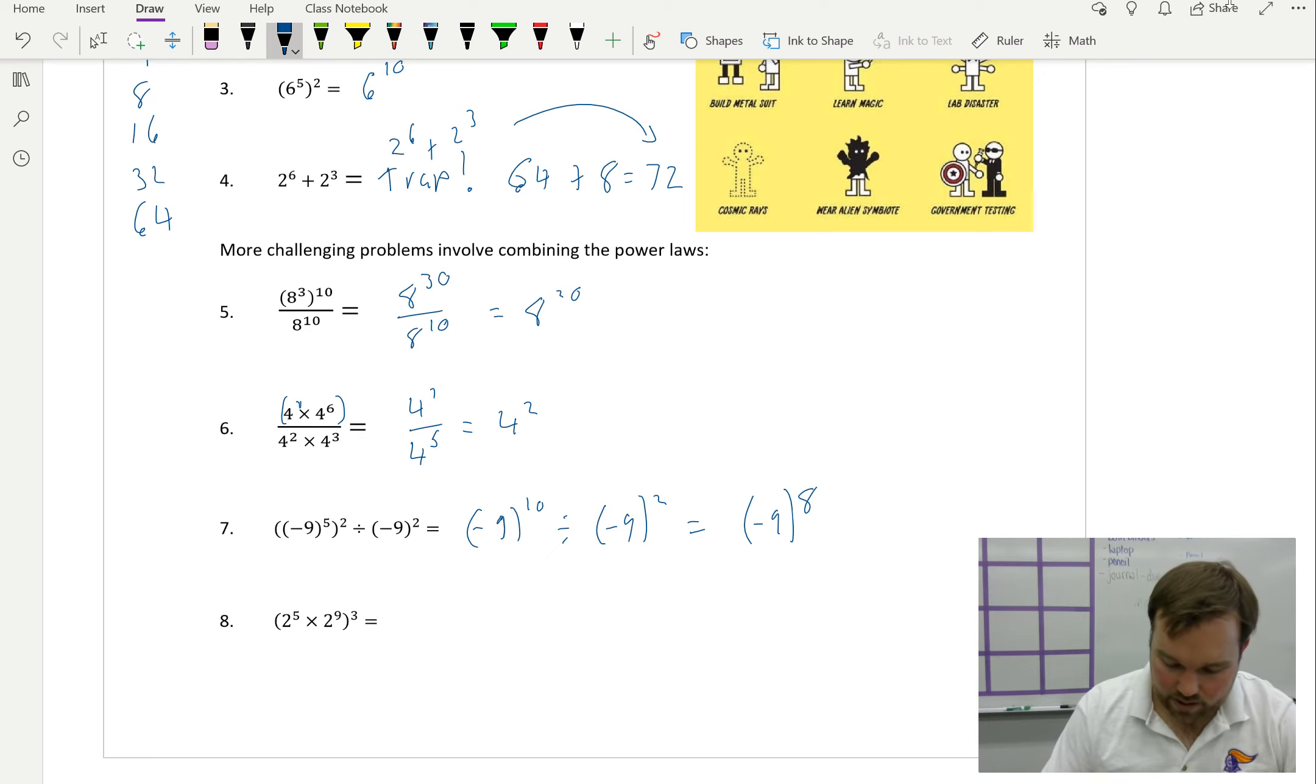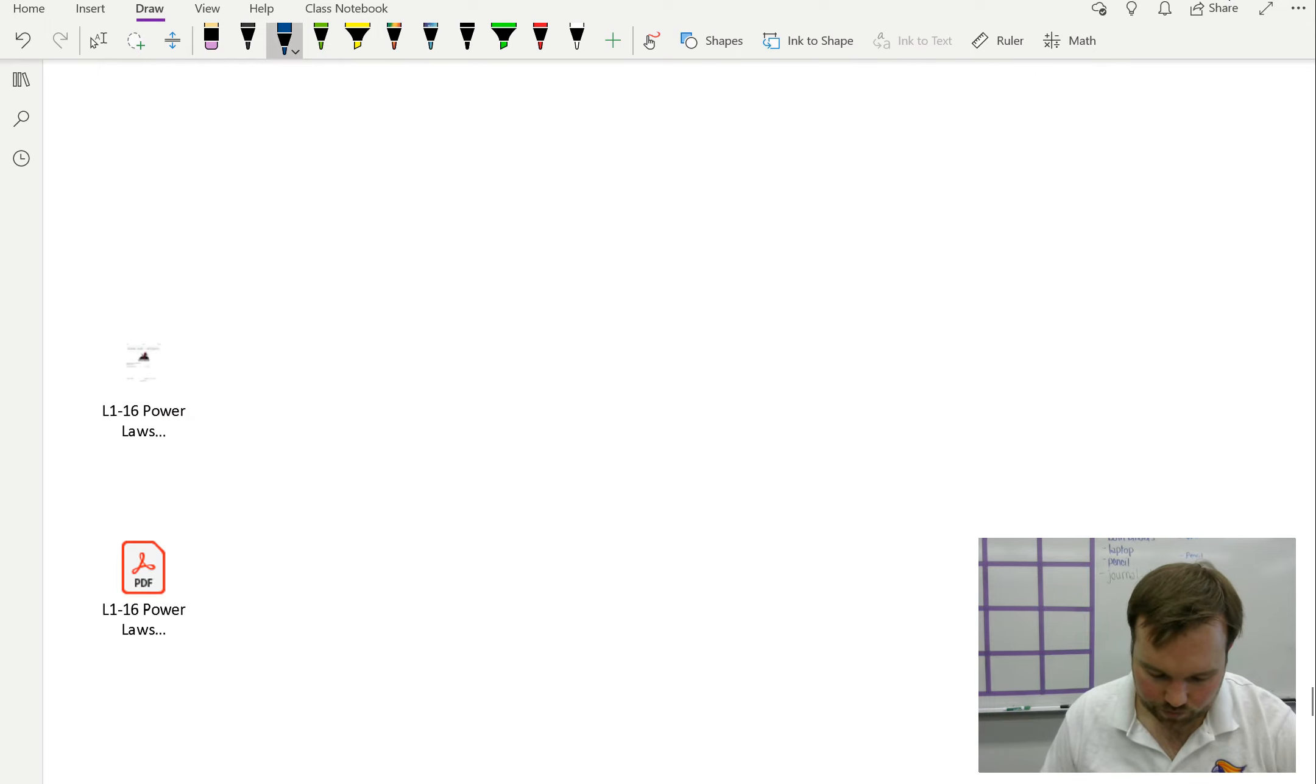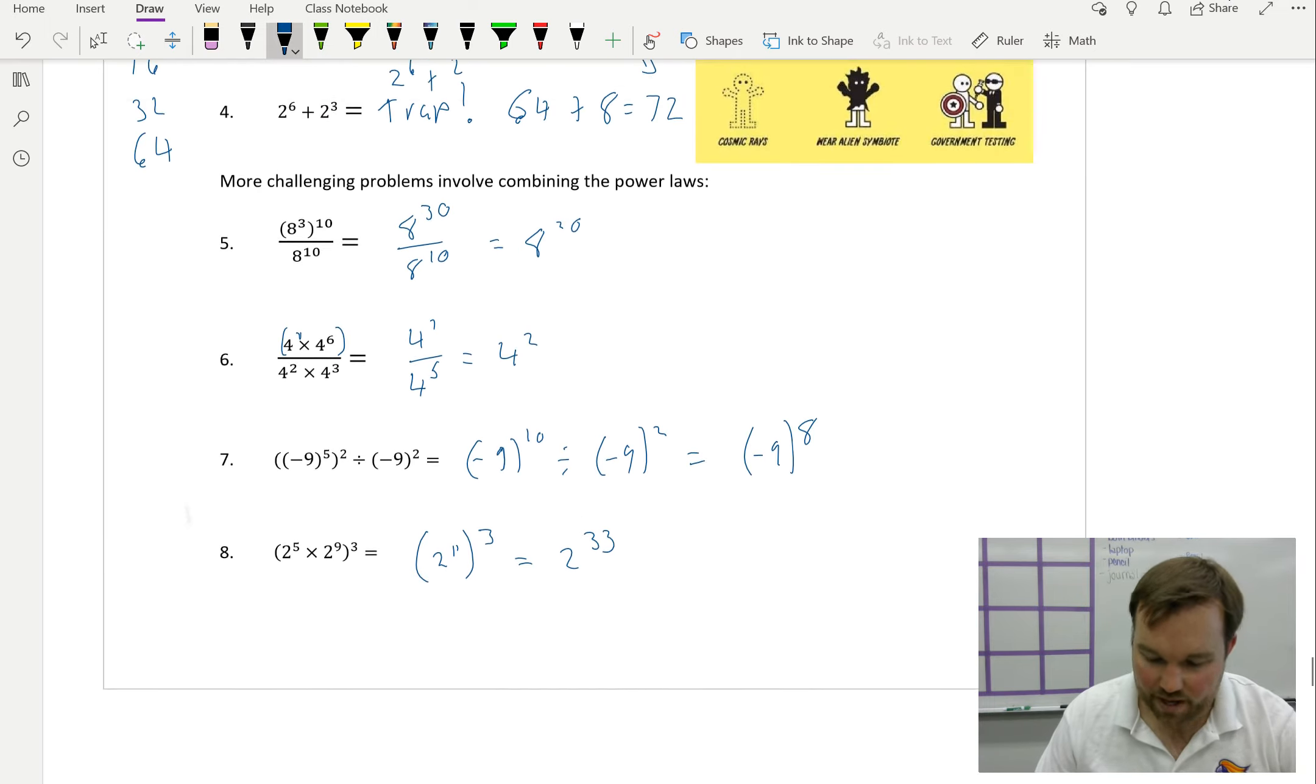Here, inside the brackets first. Inside the brackets first, it looks like 2 to the 11, then to the 3. Then that equals 2 to the 33. So remember, follow BEDMAS, but use the rules while you go along. Alright, that is all for this video. There will be another video, same sort of thing, coming up next. Enjoy.